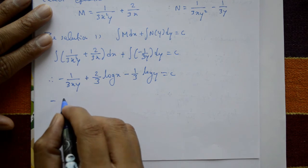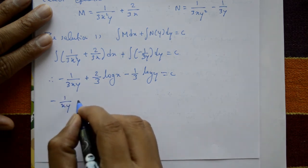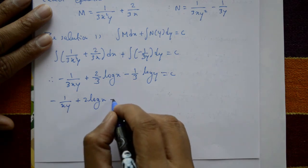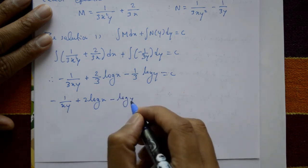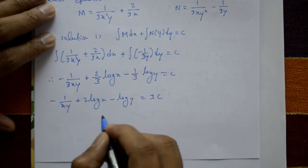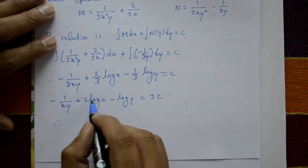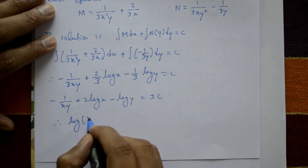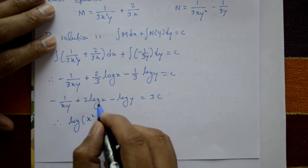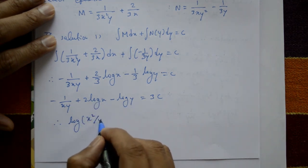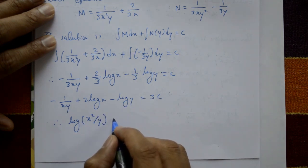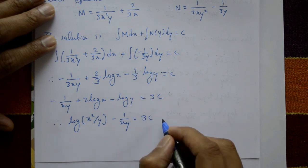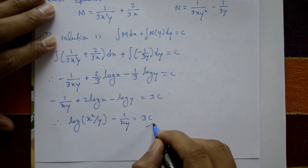Multiplying through by 3: -1/(xy) + 2ln x - ln y = 3c. Using log properties, 2ln x = ln x². Therefore, -1/(xy) + ln(x²/y) = 3c. This is the required solution.